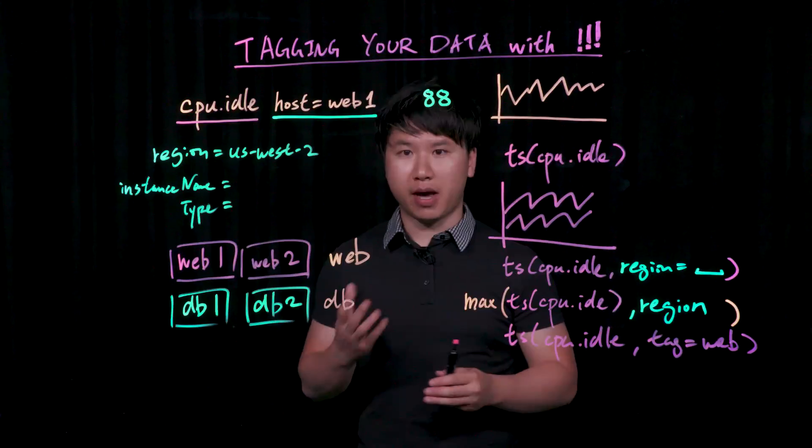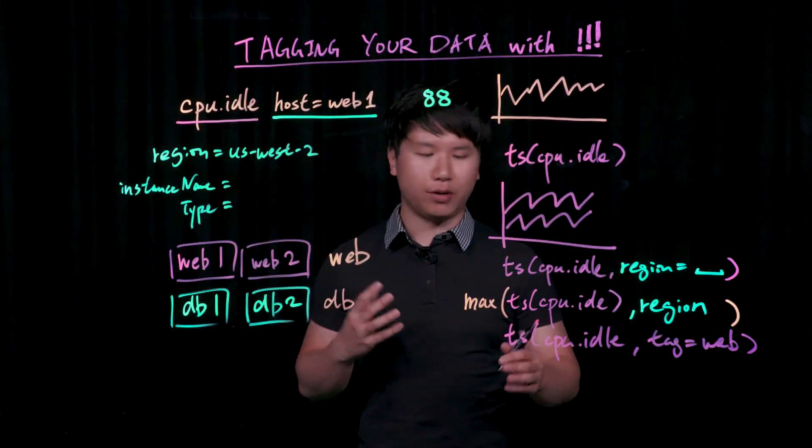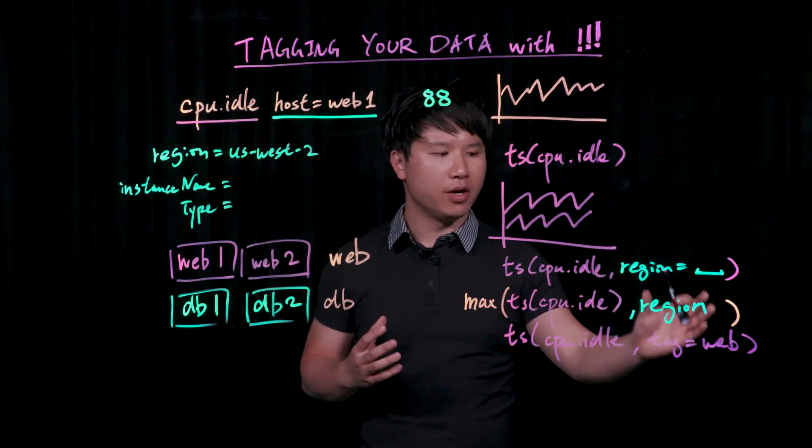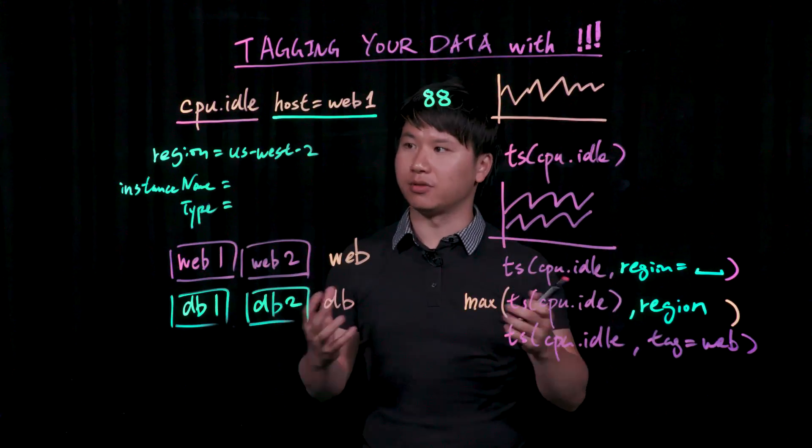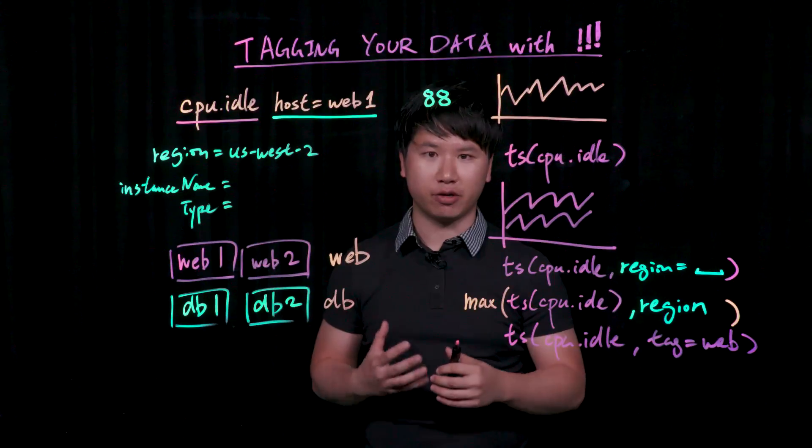Now you could actually mix and match point tags with host tags, with source tags, and what it means is you could actually pull out only your web tier in a particular region, and that would actually pull out just the time series that matched the criteria that you have.